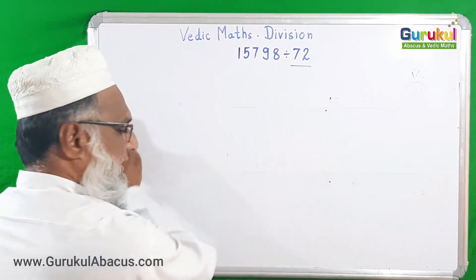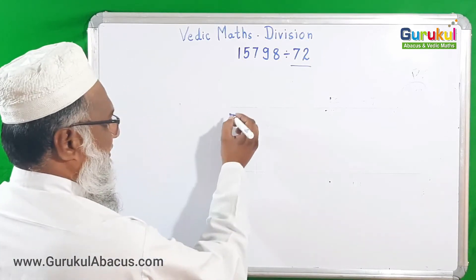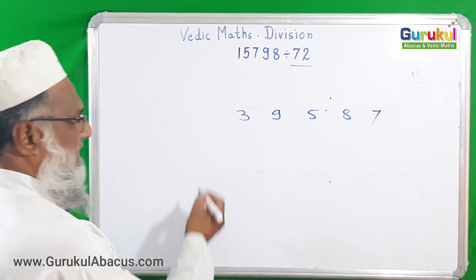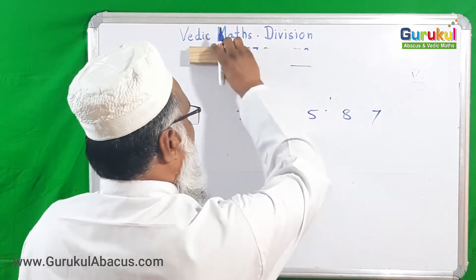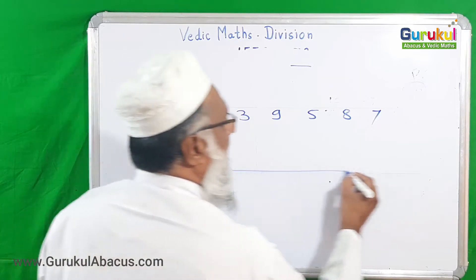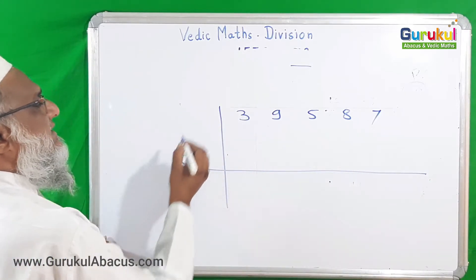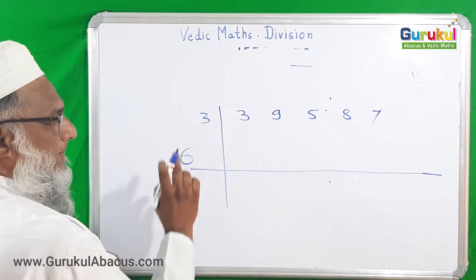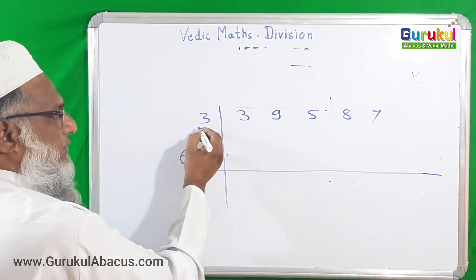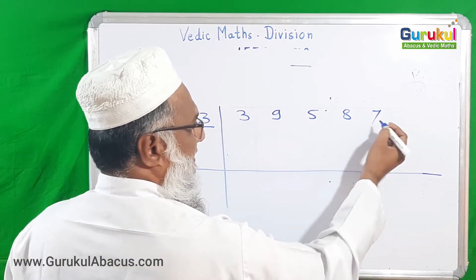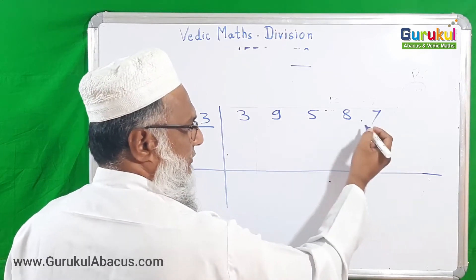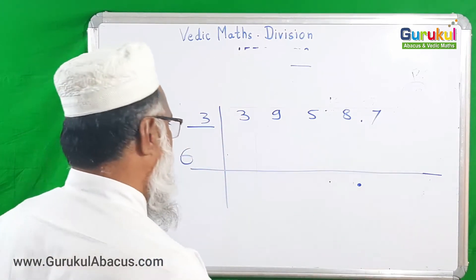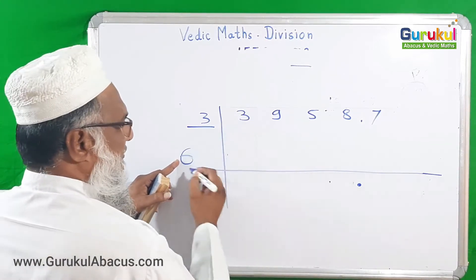Our second example is 39,587 divided by 63. The divisor is 63 — I take 6 as the main divisor and 3 is our flag digit. Since the flag digit is one digit, from the problem number I keep one digit after the decimal point. I place the decimal point here and also in the answer section. Now we continue the example.